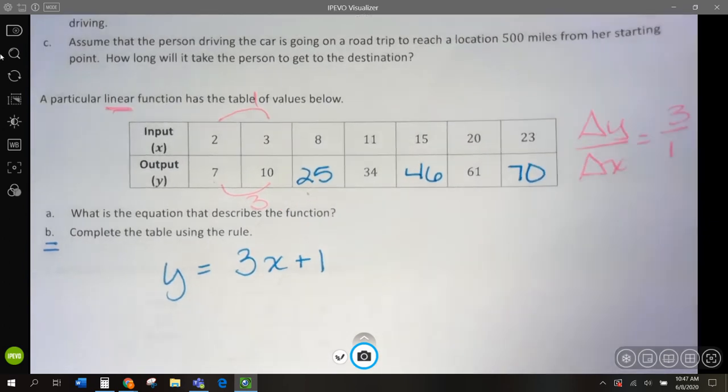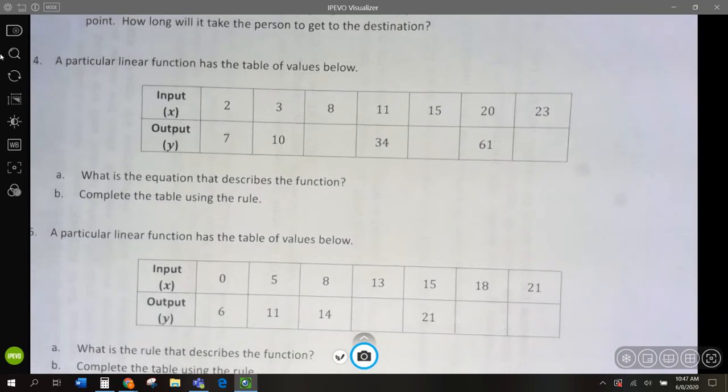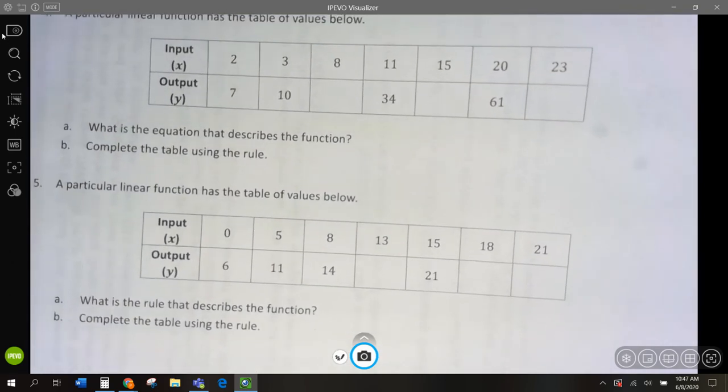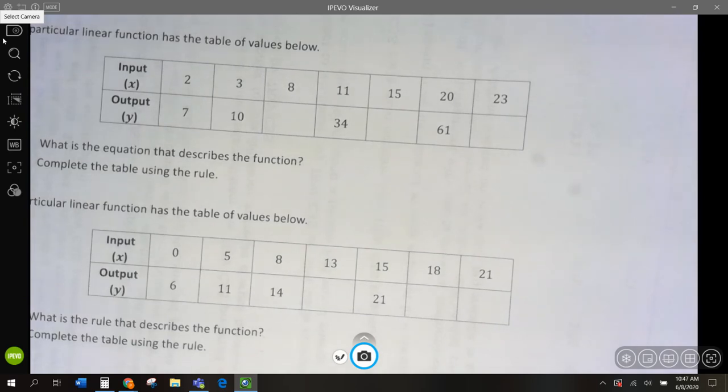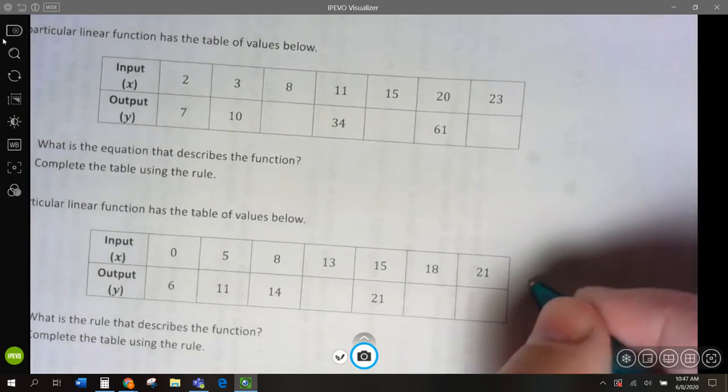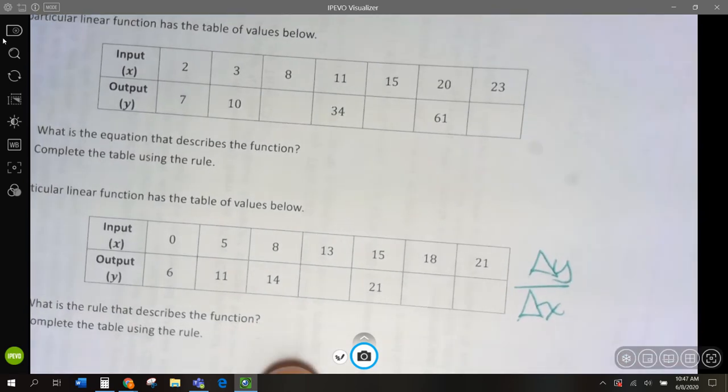And let's look at number 5, our last problem for today. Then I want us to find the rule here. So, let's once again do our change in y over change in x. Change in y over change in x. That is going to give us our slope.